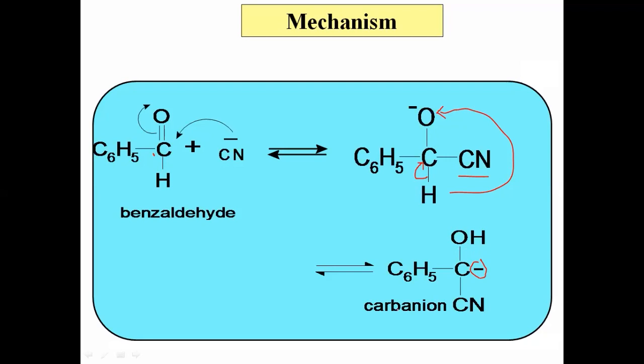We get a new intermediate, which is nothing but the carbanion. Carbon is bearing a negative charge. This is the carbanion formed in the first step.